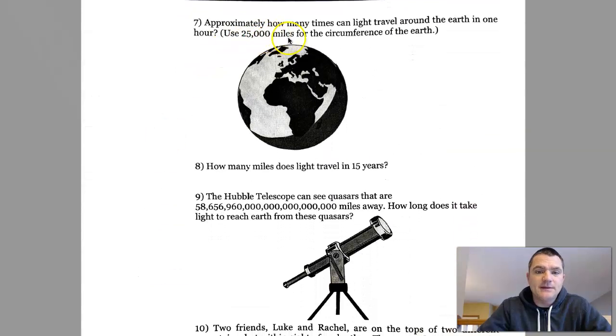Number seven: Approximately how many times can light travel around the Earth in one hour? Use 25,000 miles for the circumference of the Earth.